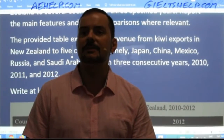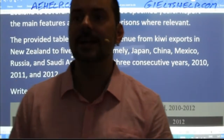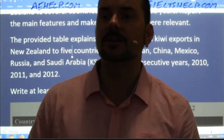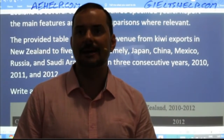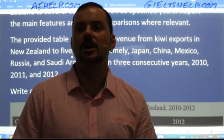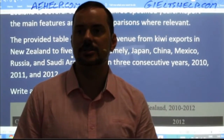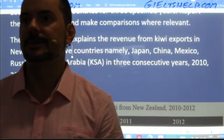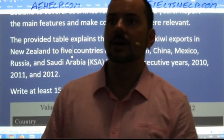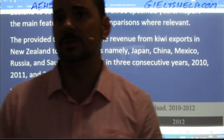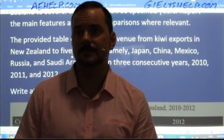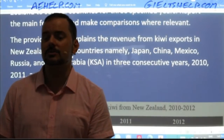Mustafa wrote: 'The given table illustrates New Zealand's kiwi sales overseas to a few countries in three consecutive years.' Mustafa, be careful: New Zealand needs capital N and capital Z; it's 'sales' — S-A-L-E-S — not 'shells' or 'cells'; and say 'five countries' rather than 'a few.' Also be careful not to write 2011 twice. All of those errors would cost you marks.